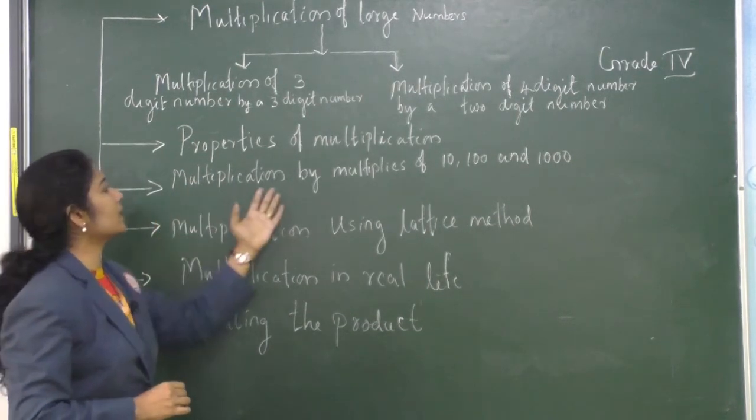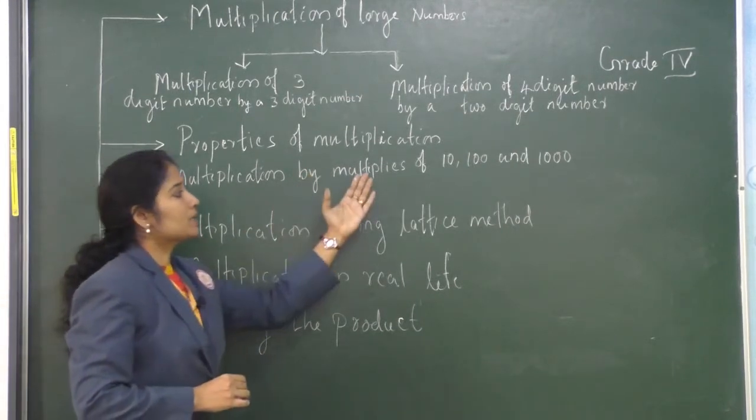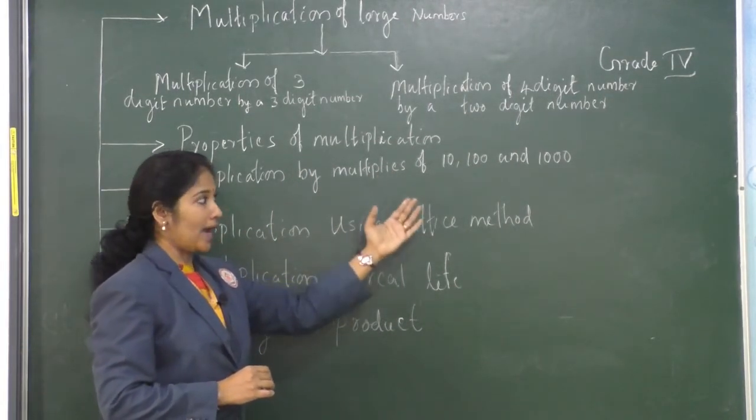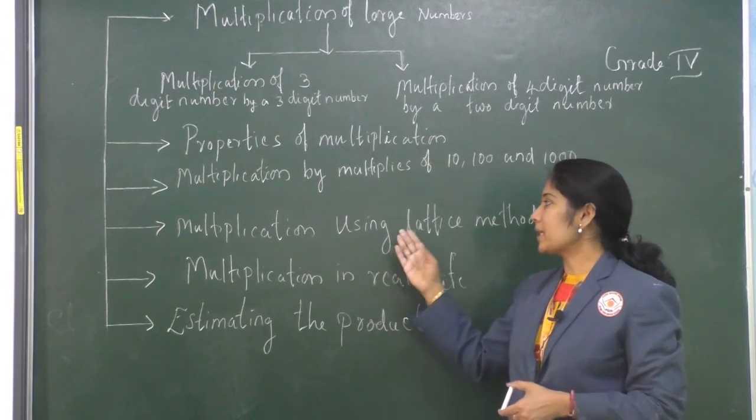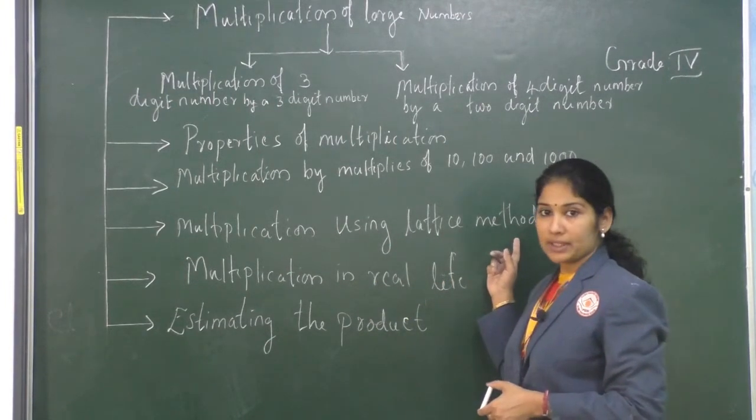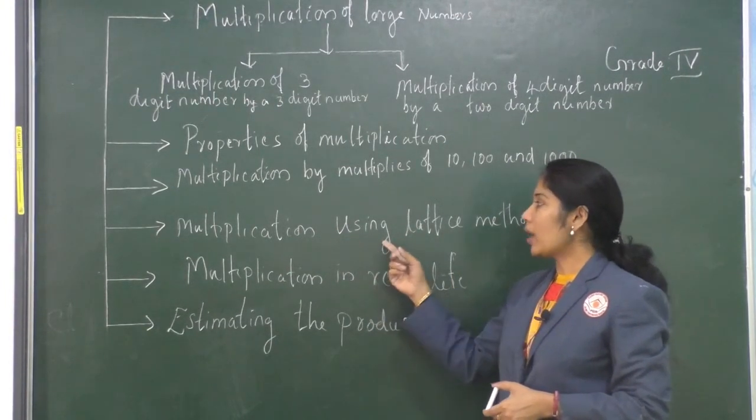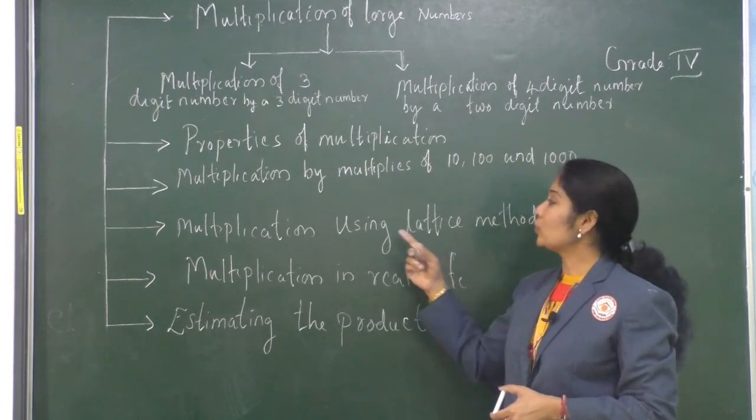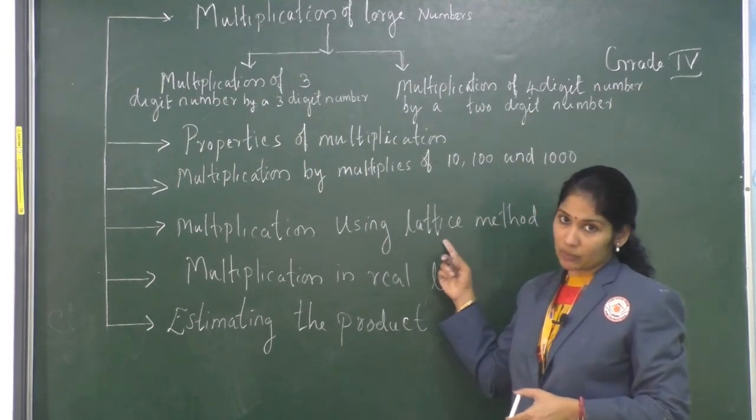And next topic is multiplication by multiples of 10, 100, and 1000. Next topic is multiplication using lattice method. Here, we learn how to apply lattice method to find the product of 2 numbers with the help of a grid.